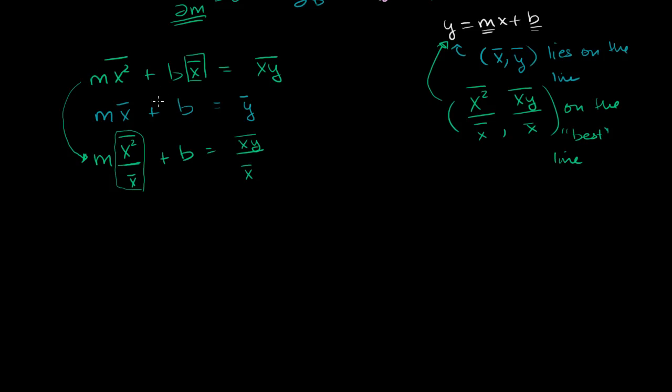Or we could just say it's a solution to the system of equations. And they're actually mathematically equivalent. So let's solve for m first. And if we want to solve for m, we want to cancel out the b.